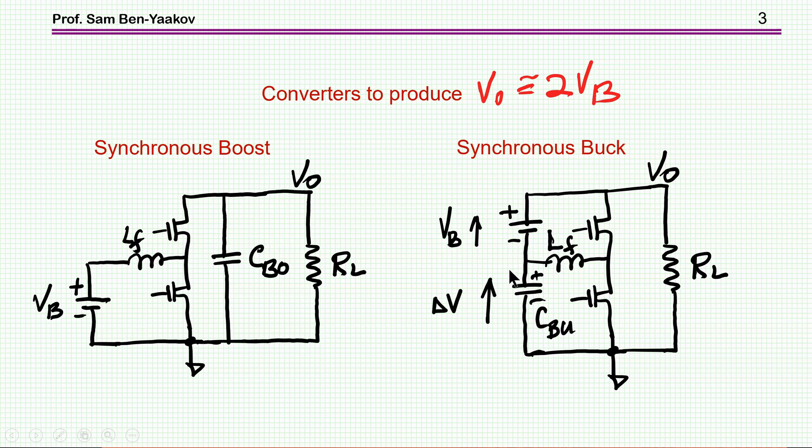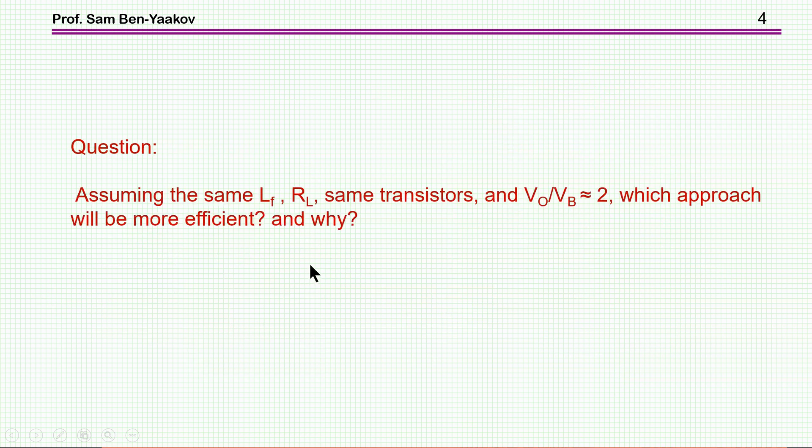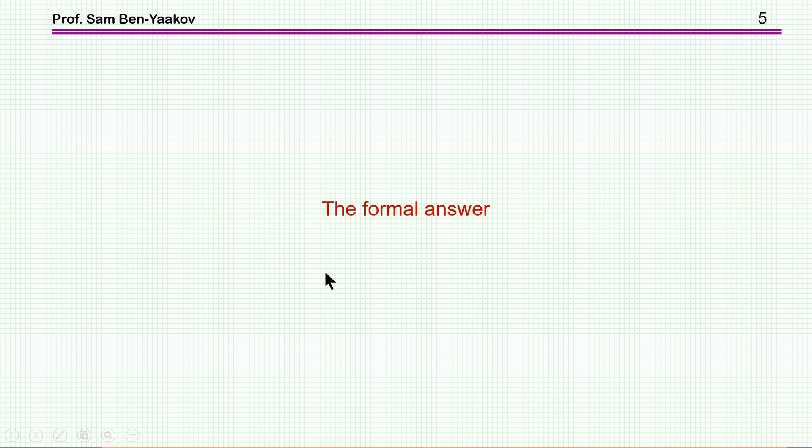So this voltage is added to the battery to form the output voltage. These are two possible solutions to the problem of boosting up the voltage of the battery. I'm just considering the special case of say Vout is twice the battery voltage. So here delta V would be the battery voltage. And the question was assuming the same inductor, load resistor, same transistors and also a gain of two, which approach would be more efficient and why?